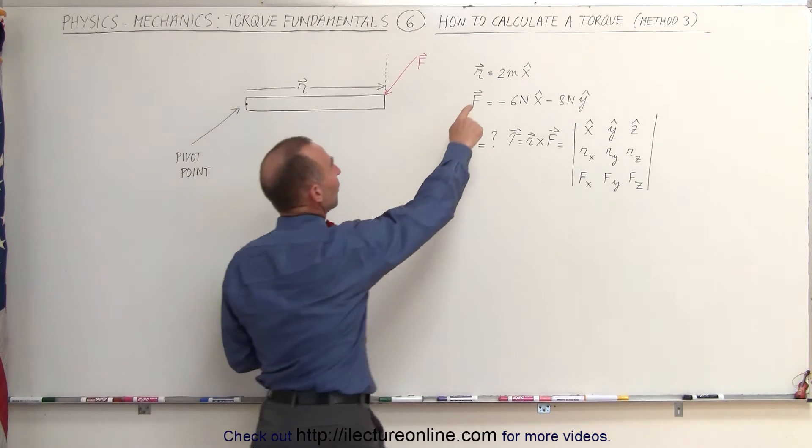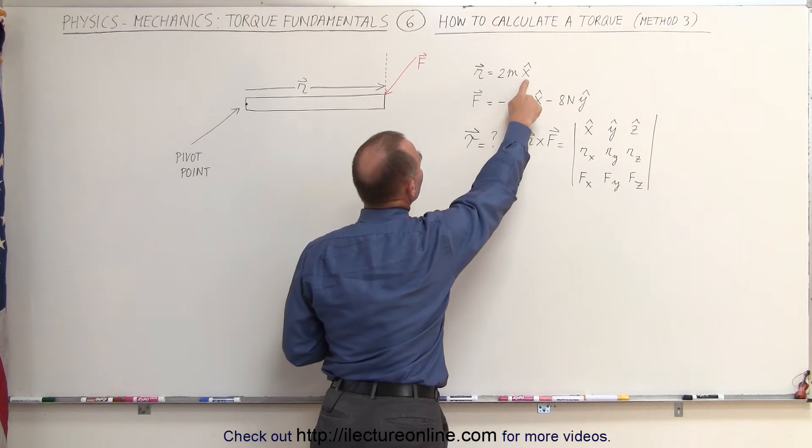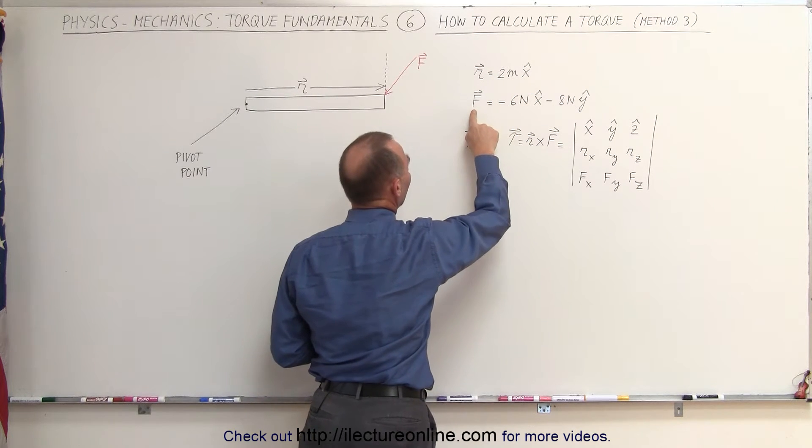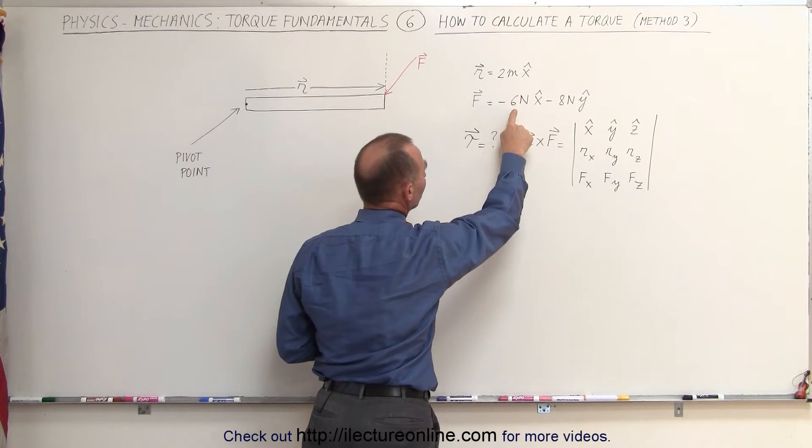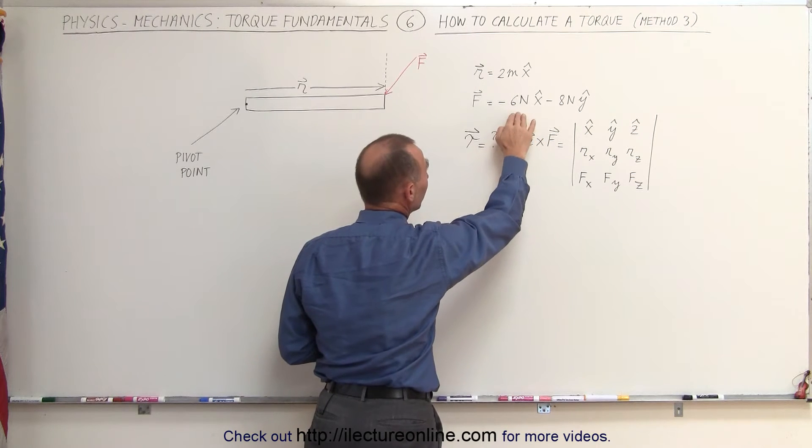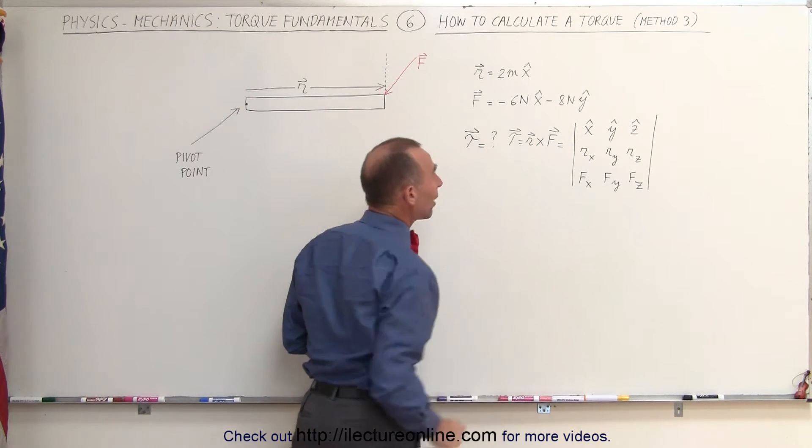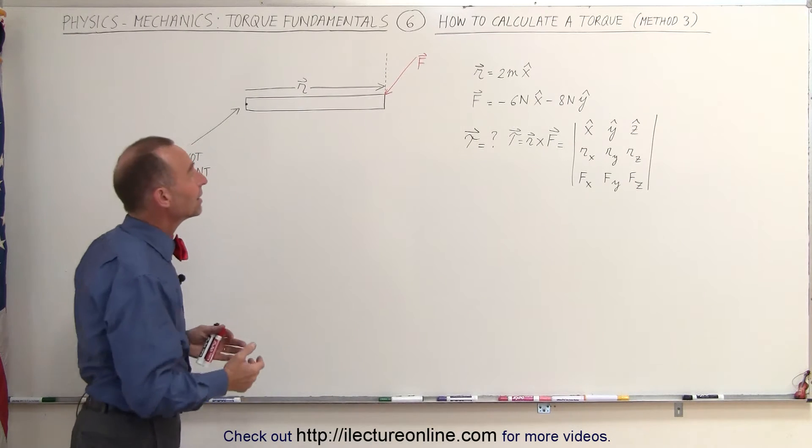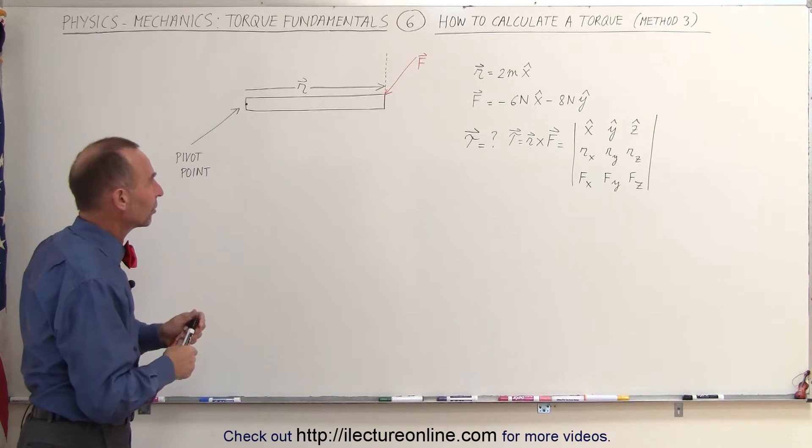If the position vector is 2 meters in the x direction, and the force has 6 newtons in the negative x direction and 8 newtons in the negative y direction, then let's find the torque for this particular scenario.